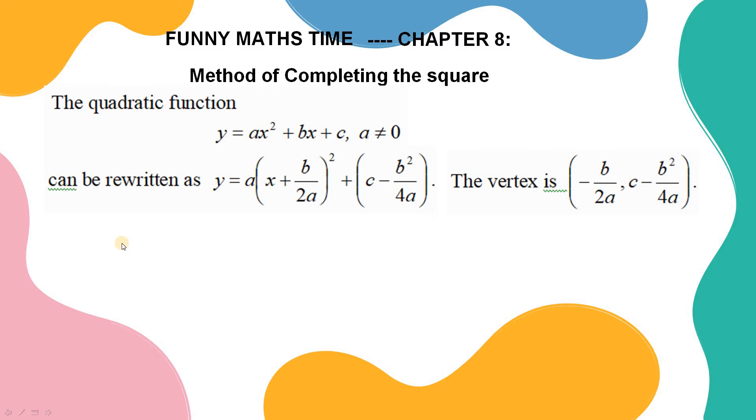Let us start the proof. For the quadratic function y equal to ax squared plus bx plus c, we can first factorize a and then this format can be a times bracket x squared plus b over a times x bracket.